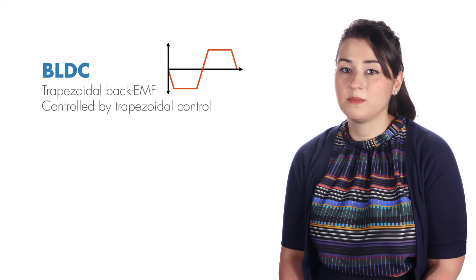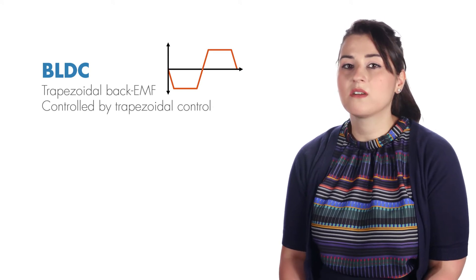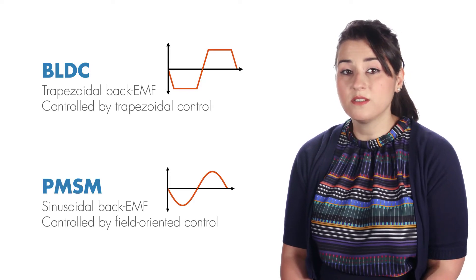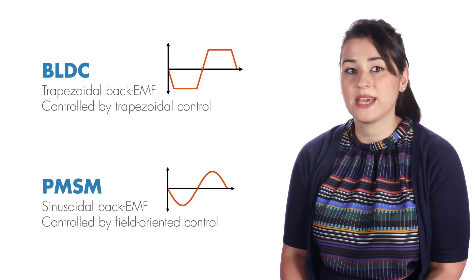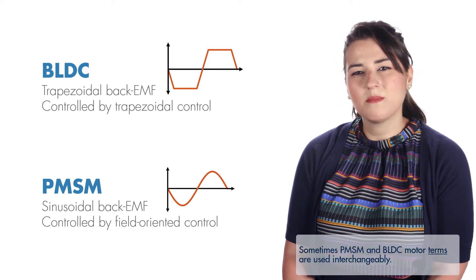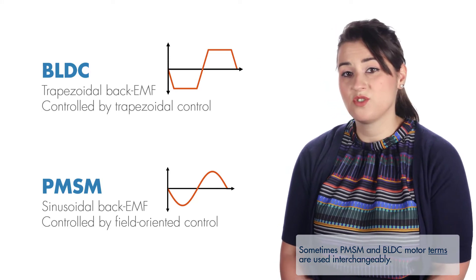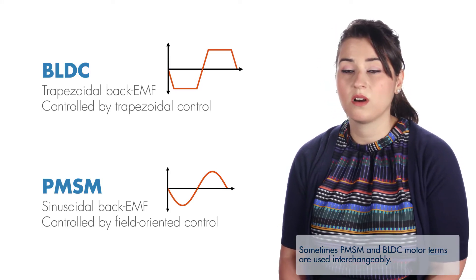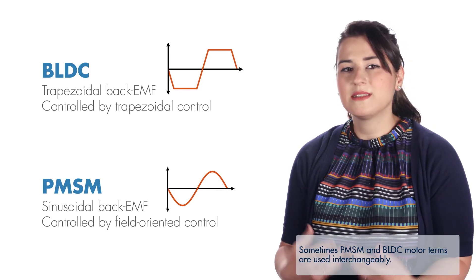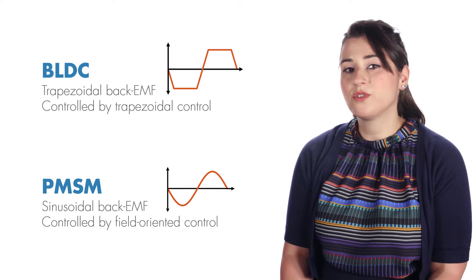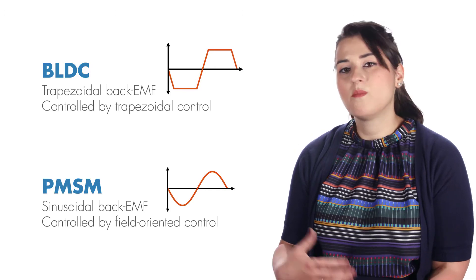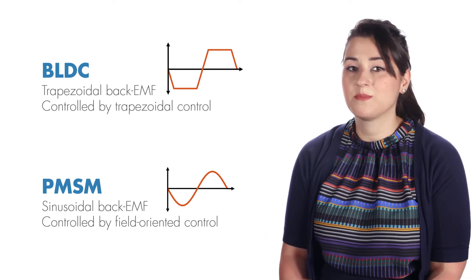BLDCs have a trapezoidal back EMF shape and are commonly controlled by trapezoidal control. But PMSMs are controlled by field-oriented control because they exhibit a sinusoidal back EMF. Sometimes PMSM and BLDC motors are used interchangeably among the motor control community, which may cause confusion about their back EMF profiles. But in this video series, we will refer to motors with trapezoidal back EMF as BLDCs and motors with sinusoidal back EMF as PMSMs.